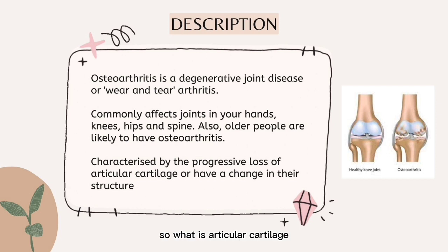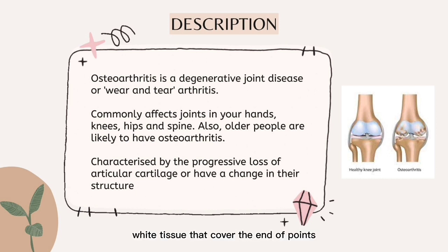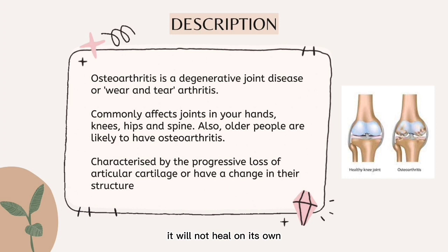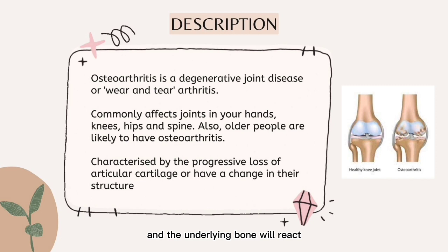What is articular cartilage? It is the smooth white tissue that covers the end of bones where they come together to form joints. Healthy cartilage in our joints makes it easier to move. When the articular cartilage is damaged, it will not heal on its own. Over time, the cartilage breaks down and the underlying bone will react.